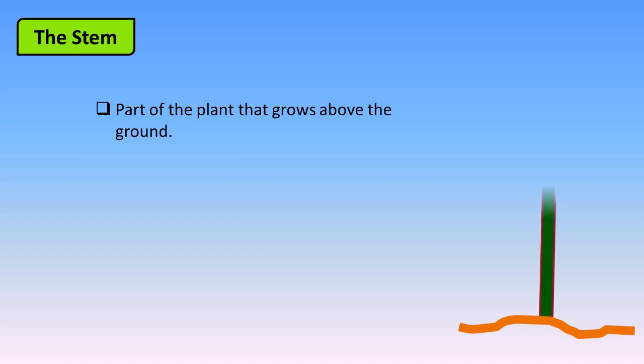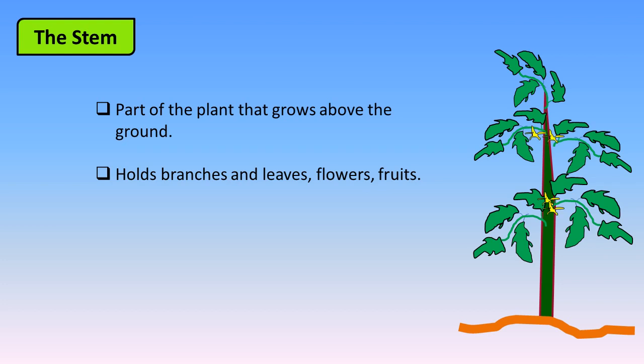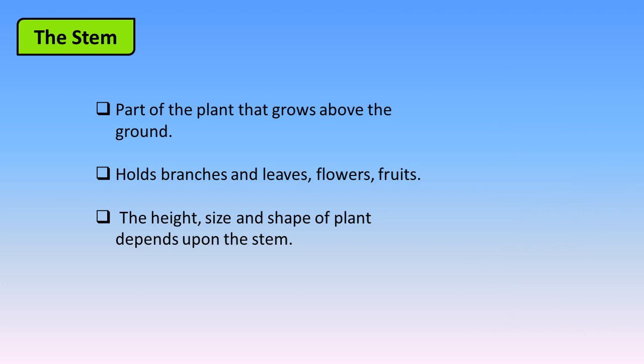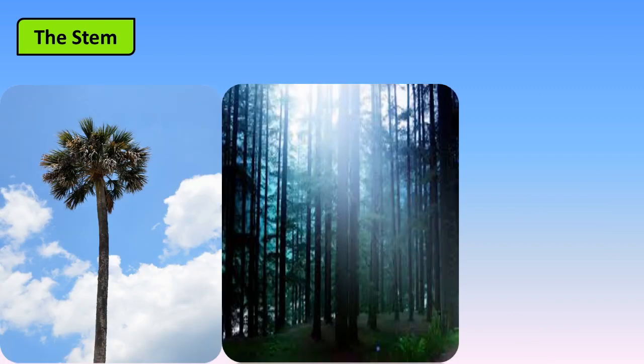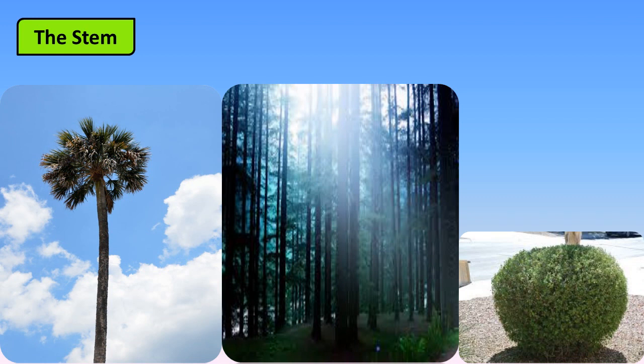The next part of the plant is the stem. It is the part of the plant that grows above the ground. It holds the branches, leaves, flowers, and fruits. The height, size, and shape of a plant depends upon the stem. We find that some plants are taller and some are shorter. The stem of some plants is hard and thick, while some plants have a thin and flexible stem.